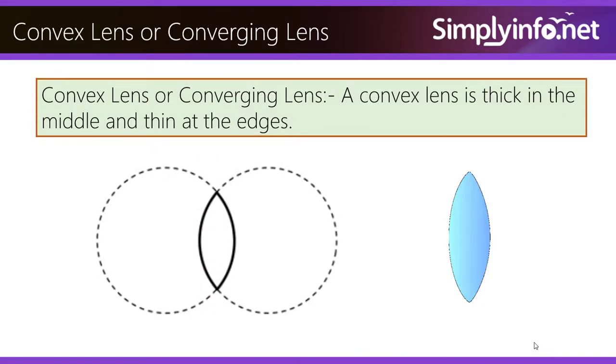Convex Lenses or Converging Lenses. A convex lens is thick in the middle and thin at the edges.